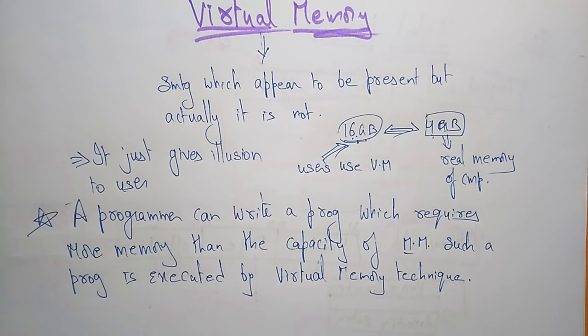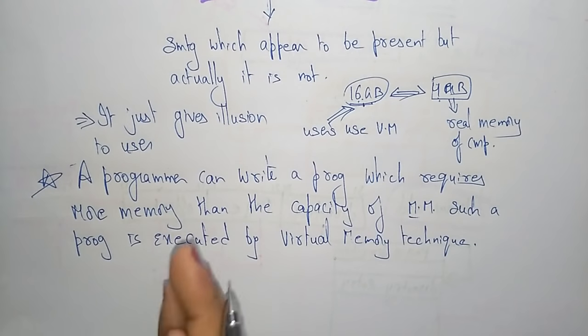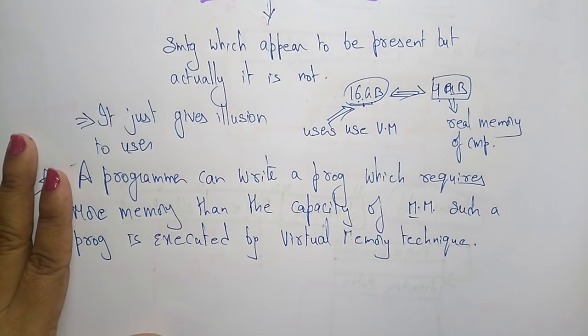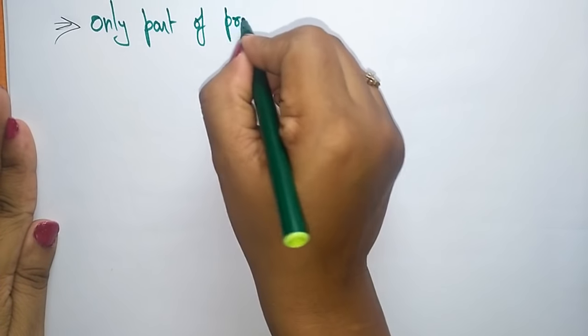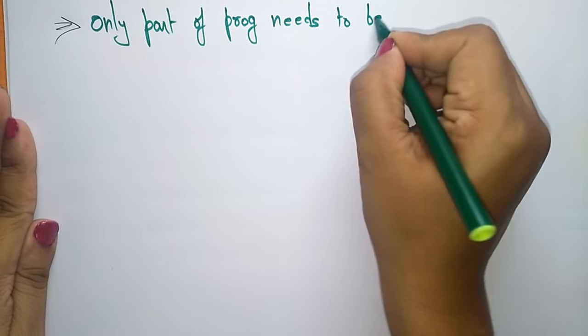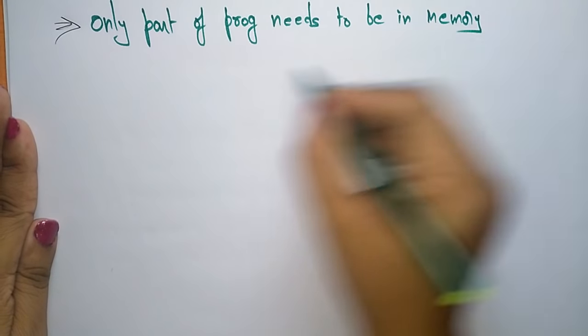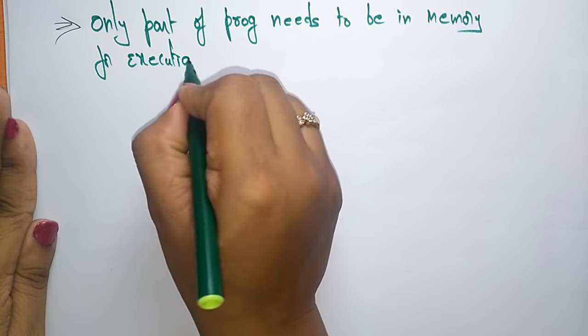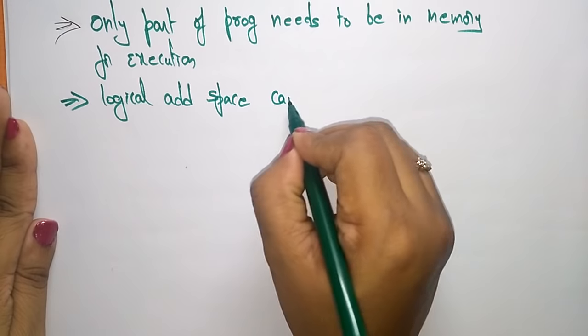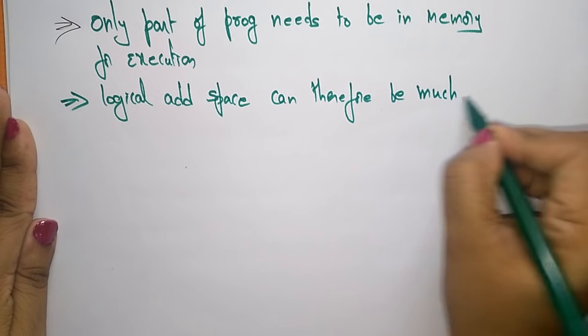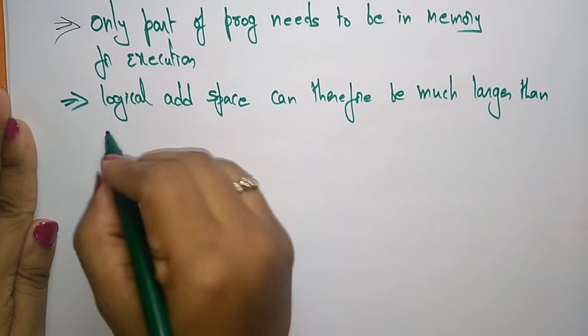Because virtual memory is just an illusion to the user — it actually doesn't appear but we think that it does. That is the basic introduction about virtual memory. Virtual memory is a separation of user logical memory from physical memory. Key points about virtual memory: only part of a program needs to be in main memory for execution. So the logical address space can therefore be much larger than the physical address space.